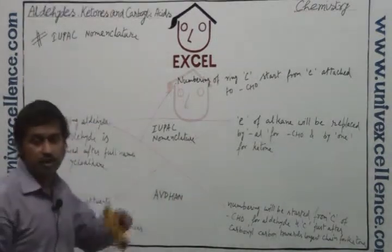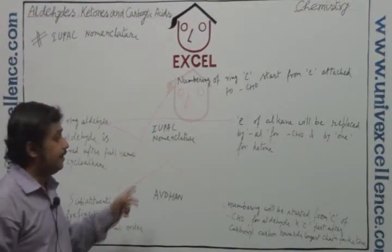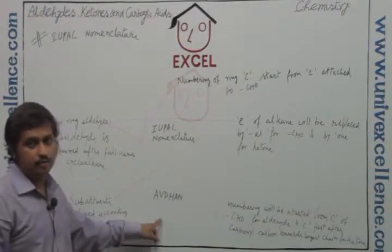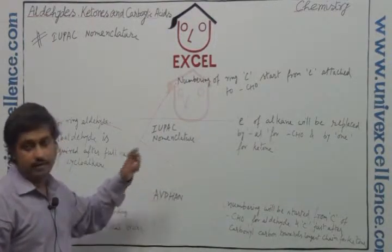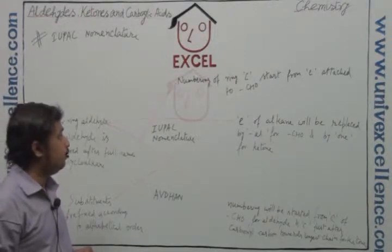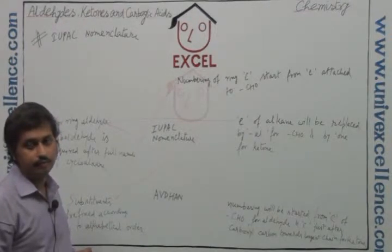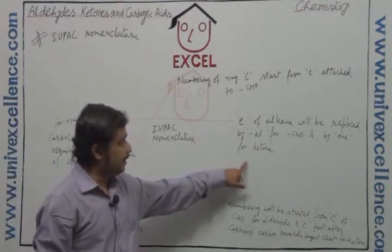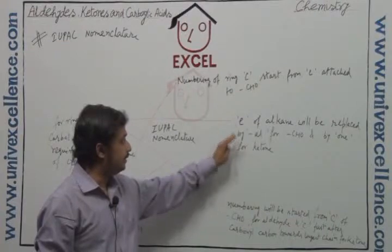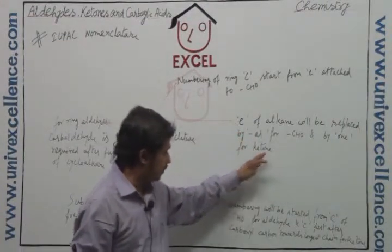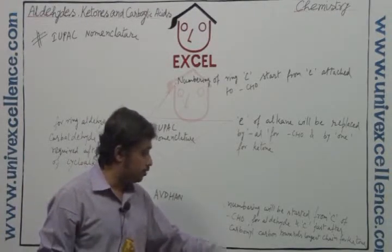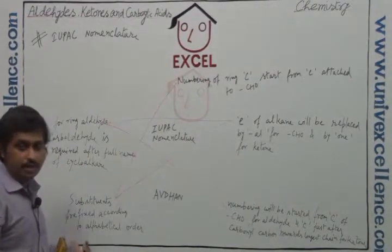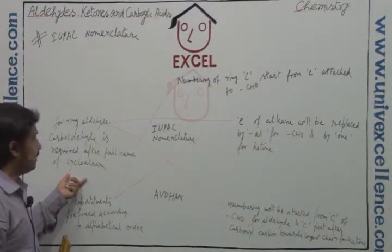There are broadly five different rules that can be easily depicted by the adhan pattern, through which this pentagon system summarizes the whole rules of IUPAC nomenclature for aldehyde and ketone. The first rule: the E of alkane is replaced by -al for CHO and by -one for ketone. Numbering starts from the carbon of CHO for aldehyde, and the carbon just after the carbonyl carbon towards the longest chain for ketone. Substituents are prefixed in alphabetical order. For ring aldehydes, use carbaldehyde.